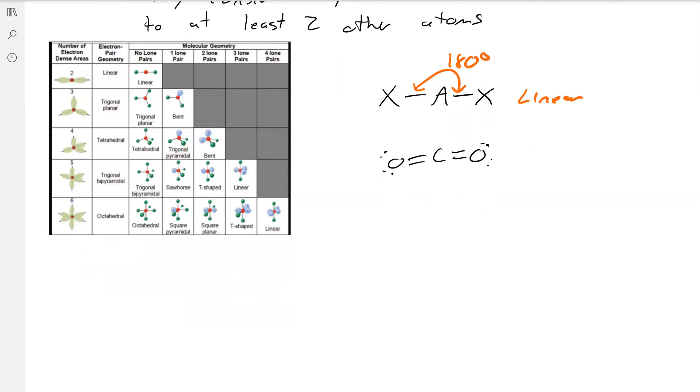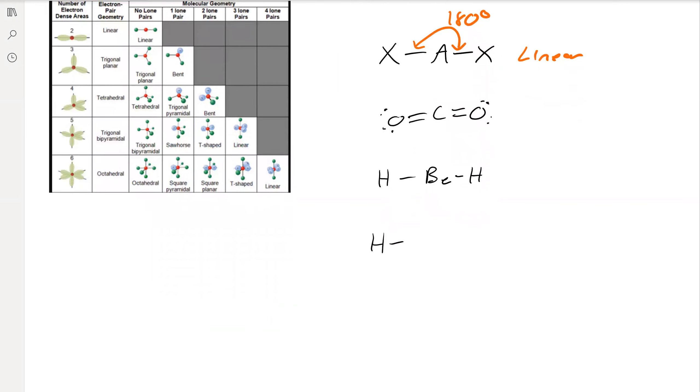Another example is BEH2, or acetylene. Right? In this case, both of these carbons here, they are both linear. They're both attached to two other atoms and no lone pairs.